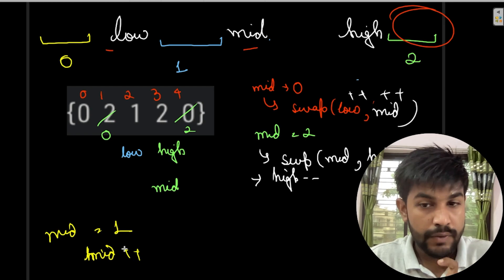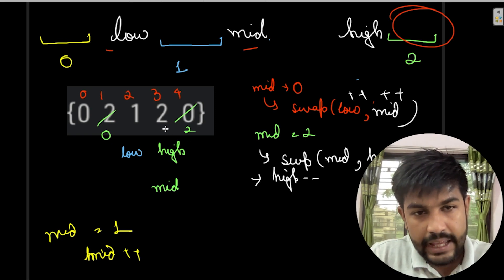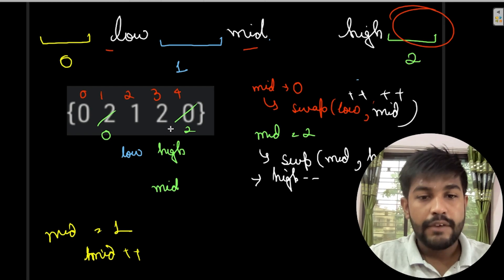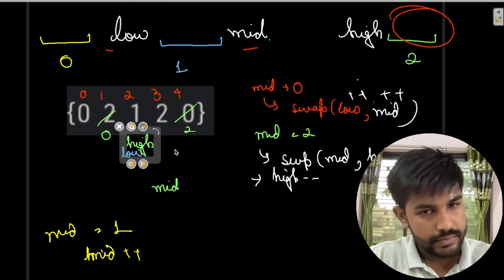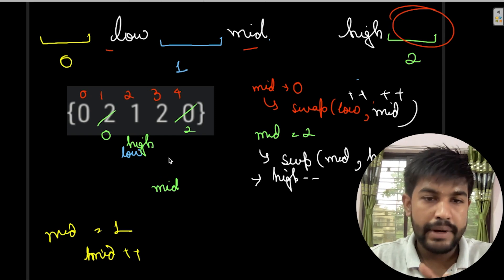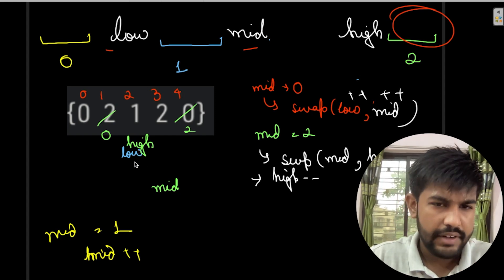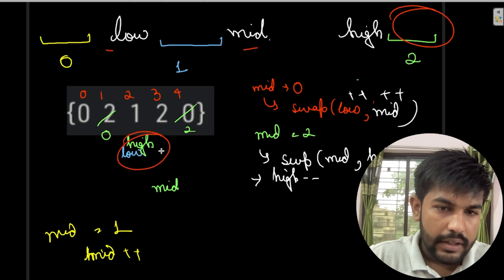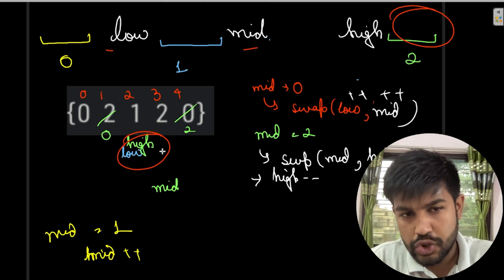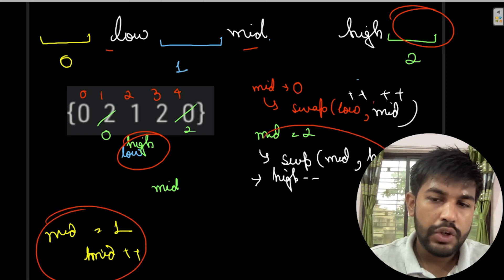Continuing the dry run: when mid equals two, swap mid and high. After the swap, decrement high. Now low and high may converge. We check again — mid equals two but high is no longer pointing there, so the loop breaks. The while condition is mid less than or equal to high, which is when we stop — when low and high get mixed up.